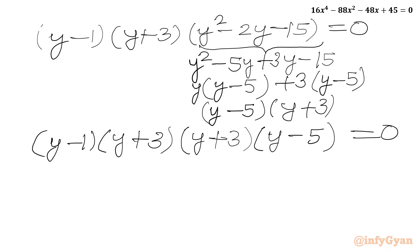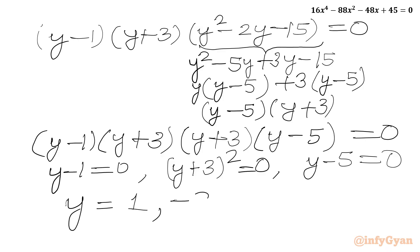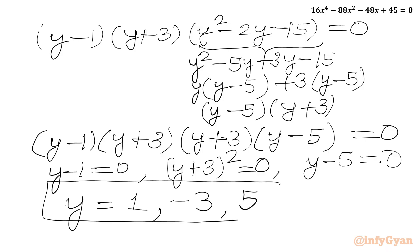Using the zero product rule, either y minus 1 equals 0, or (y plus 3)² equals 0, or y minus 5 equals 0. So we get y equals 1, y equals negative 3 with multiplicity 2, and y equals 5.